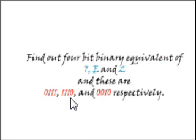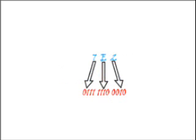1110, and 0010 respectively. Now, place the four-bit binary equivalent of 7, E, and 2 at their respective position in the hex number. After doing so, we get 011111100010, which is binary equivalent of hex 7E2.